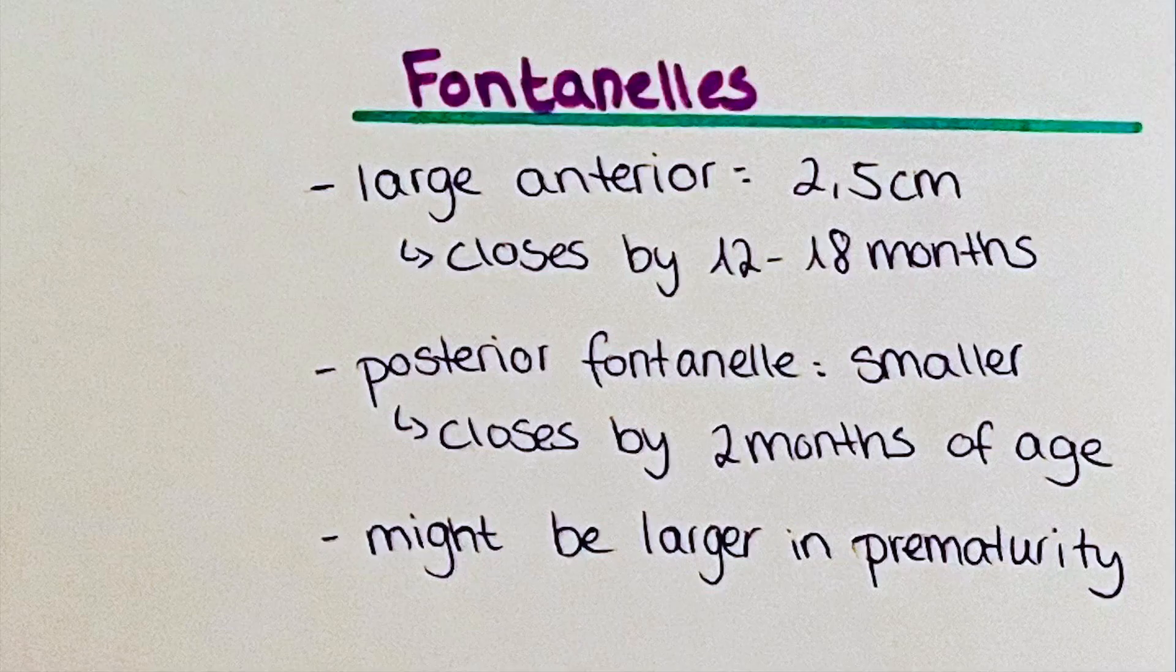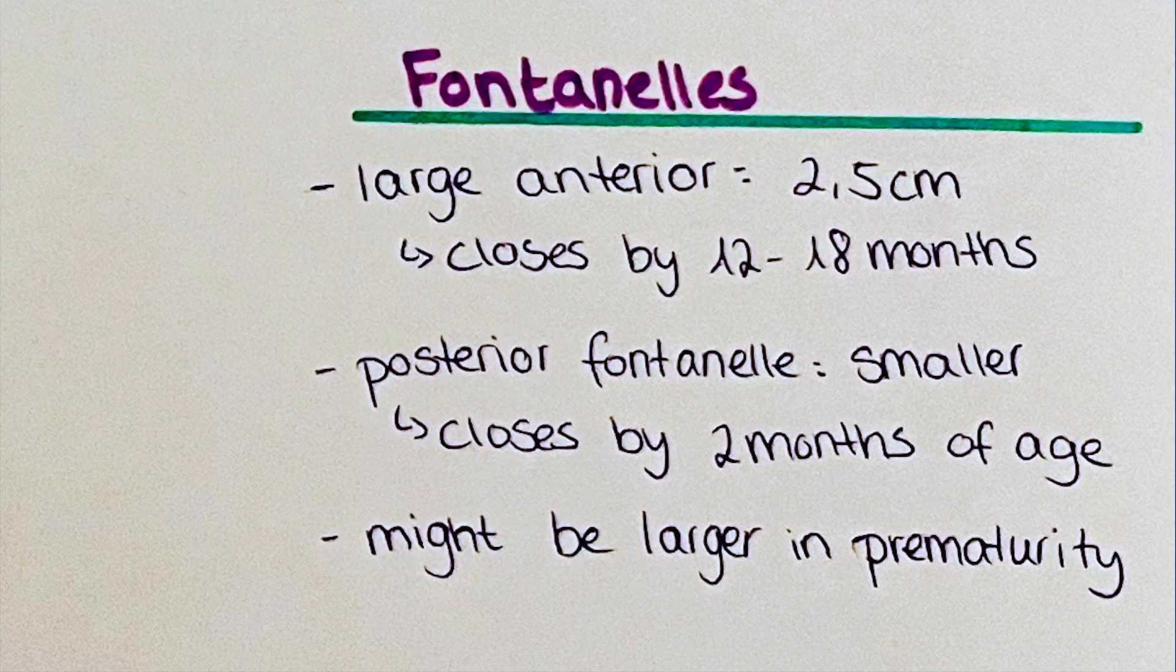Lastly I'm going to speak about fontanelles. A fontanelle is an opening in the skull of a newborn. These are areas essentially where the bones have not fully fused together yet. Normally a full-term baby is born with a large anterior, so on the front side, fontanelle, and this is up to around 2.5 cm in size. The anterior large fontanelle usually fuses at around the age of 12 to 18 months of age.